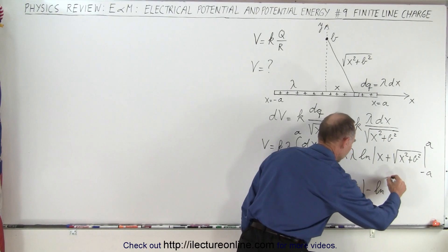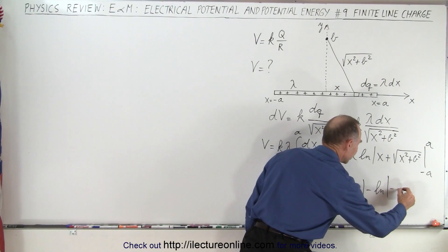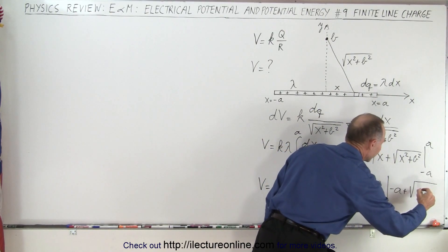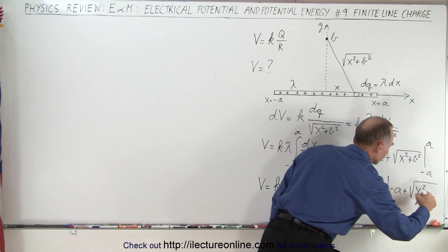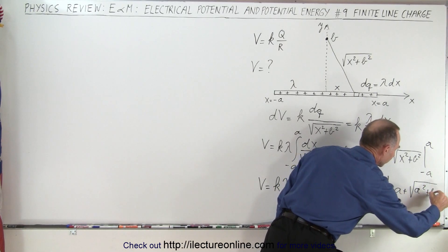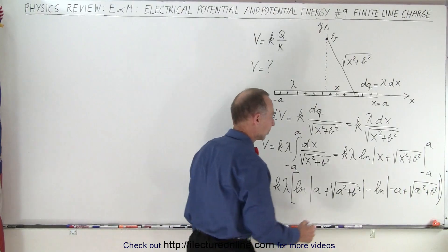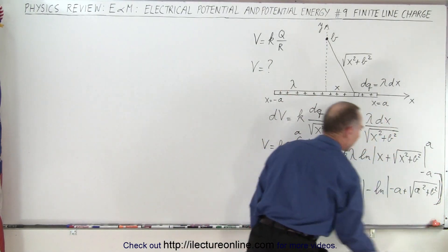...that would be minus a plus the square root of x squared... oh that would be a squared now, a squared plus b squared, like that, and parentheses around it. I had a bracket so let me make it a bracket. There we go, all right.